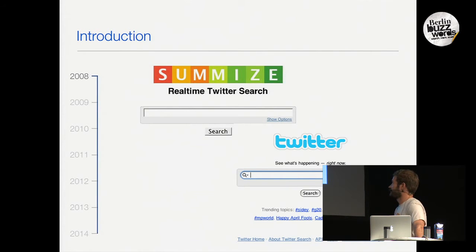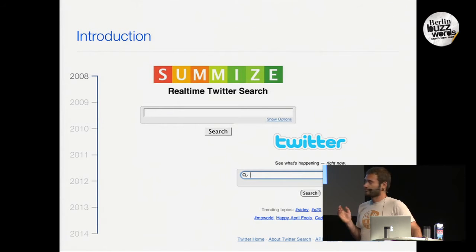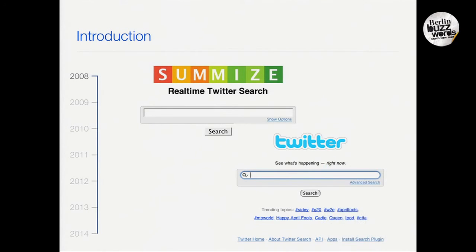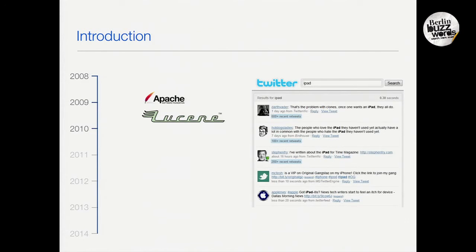Before 2008, Twitter didn't really have any search. Twitter acquired a small company called Semise — a small startup with a few people — who had built a search engine on top of MySQL for real-time search. They joined Twitter and the product first looked like a separate website. In 2010 when I joined Twitter, it was already growing so much that the MySQL solution was falling apart and couldn't deal with the load anymore, so we decided to use Apache Lucene — but a heavily modified version.